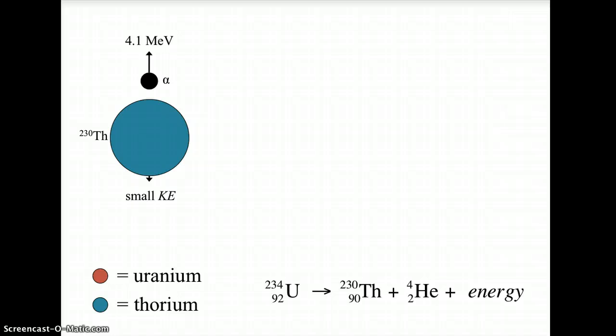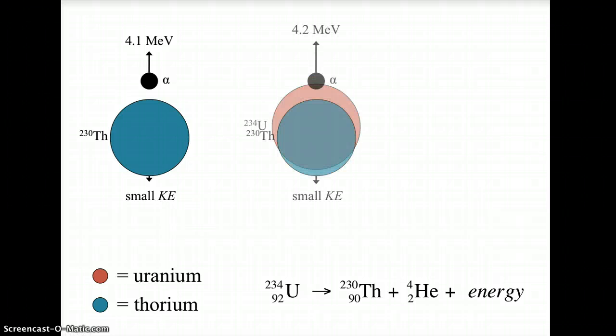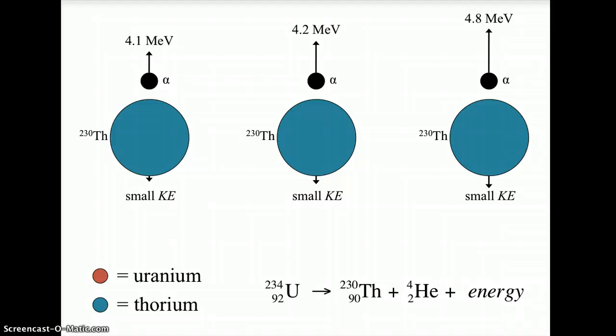Now, here's the cool thing. This is not what happens every single time. The alpha doesn't always get that much kinetic energy. Sometimes, in the decay, the alpha has a little more energy. And other times, the alpha has even more energy. So what's happening to the nucleus, to the thorium? In some cases, it loses more energy. And in other cases, it loses less and even less.